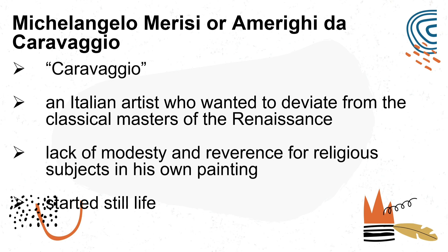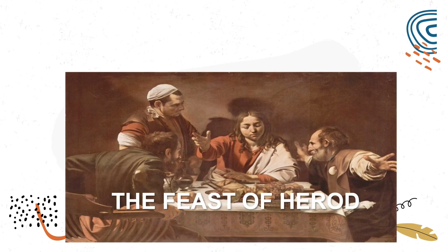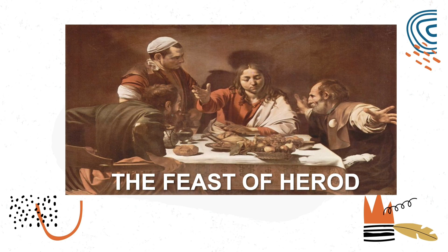His models during this period were either himself or young persons. One of his artworks is The Supper at Emmaus, depicting the moment when the resurrected but incognito Jesus reveals himself to two disciples, presumed to be Luke and Cleopas, in the town of Emmaus. Cleopas wears the scallop shell of a pilgrim, while the other apostle wears torn clothes. It is unusual because of the life-size figures, dark and black background, and the table laid out with a still life meal.